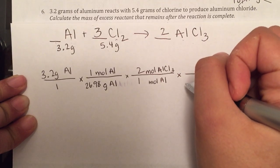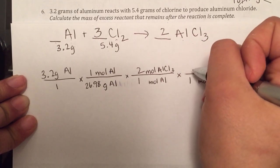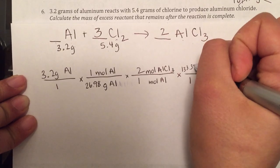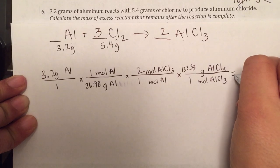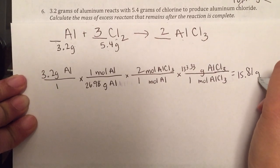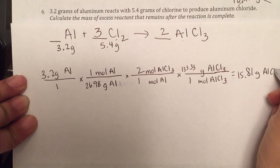And then lastly, I can go from moles of aluminum chloride to grams of aluminum chloride, which one mole is equal to 133.33 grams of aluminum chloride. And I get 15.81 grams of aluminum chloride.